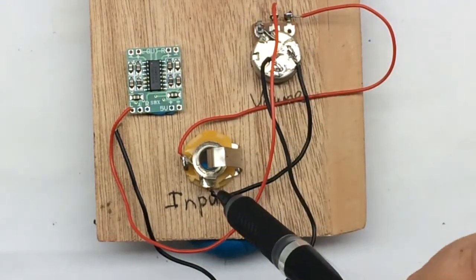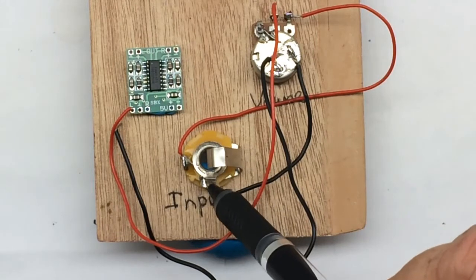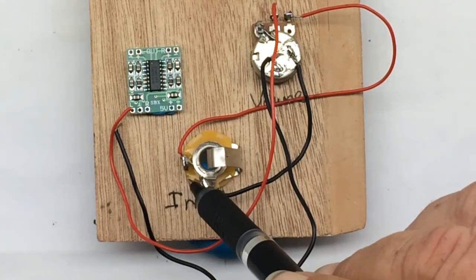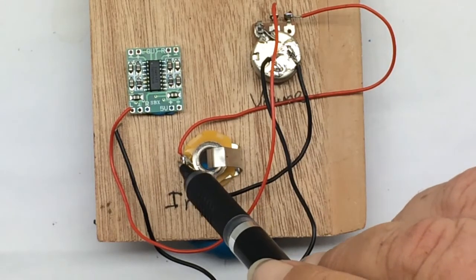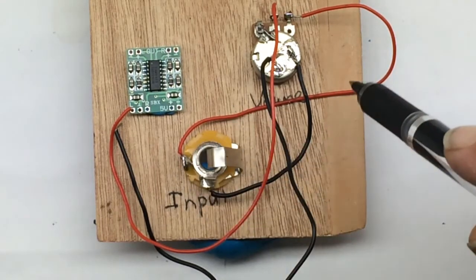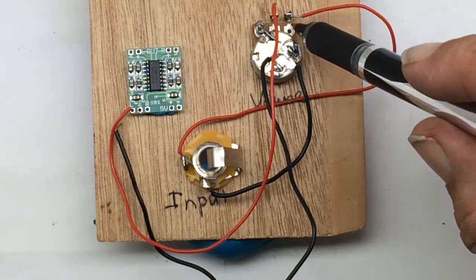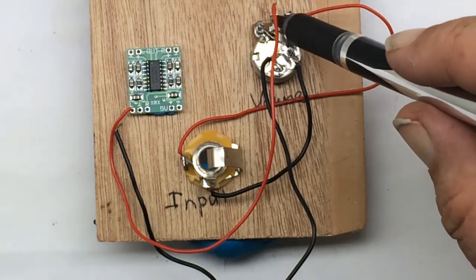We're going to take our ground, which is the sleeve on the jack, and ground it straight to the pot. We're going to take the positive, which is the tip, and bring that around to the right hand lug.